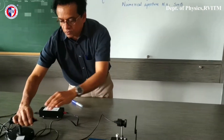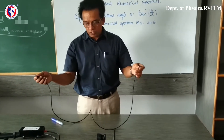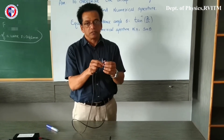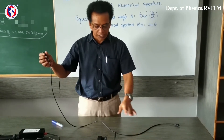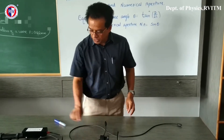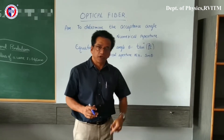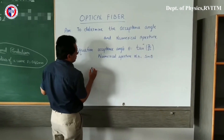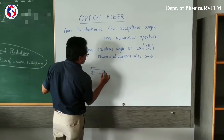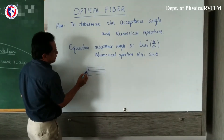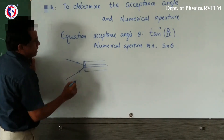As you can see here, this is the optical fiber. When light enters from one side, it will travel through the optical fiber using total internal reflection and come out the other end. When the ray is entering, inside there is a core and cladding, and the ray should be falling within a specific cone, which we call the acceptance cone.